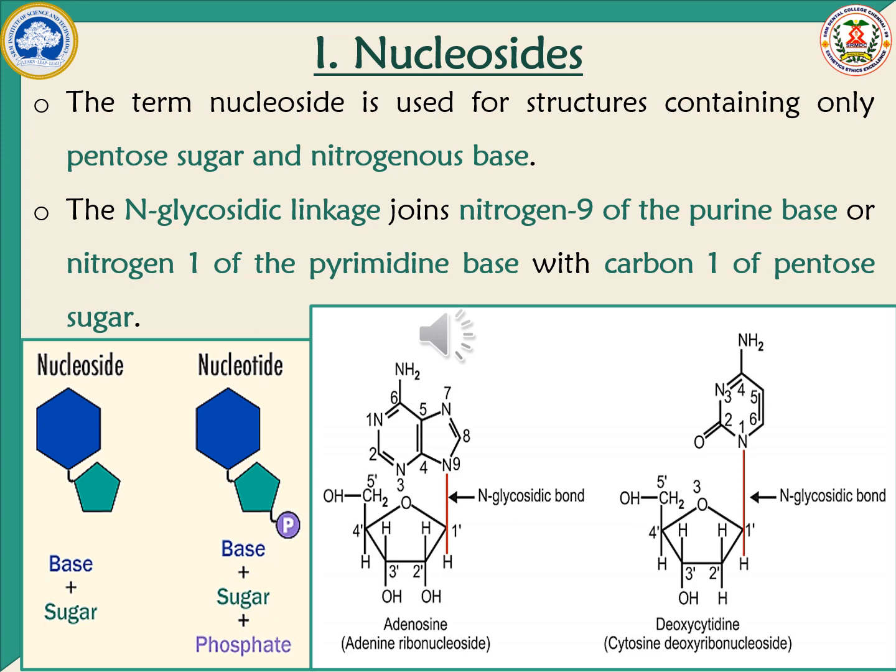The nitrogenous base may be purine or pyrimidine. In the case of purine, the sugar molecule attaches to nitrogen atom number 9. Similarly, for a pyrimidine base, the pentose sugar attaches to nitrogen atom number 1. This is how nucleosides are formed in DNA.